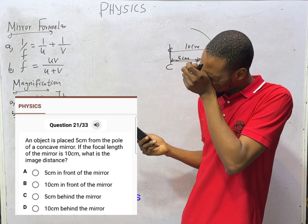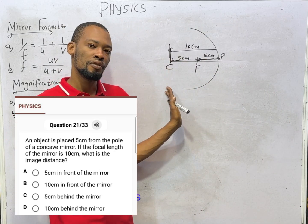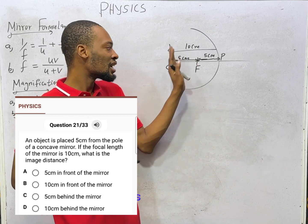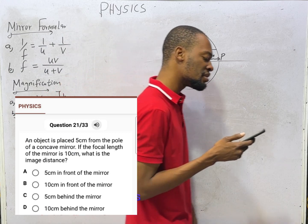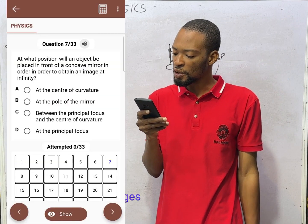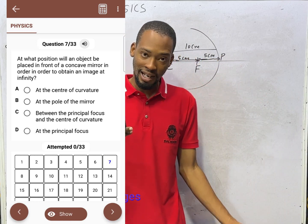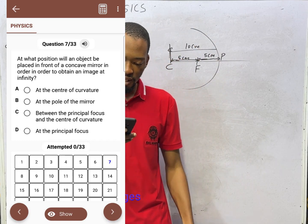As I told you in the last two episodes: if an object is placed at the center of curvature, the image will also be formed at that center of curvature. So the object is here and the image will also be formed at the center of curvature — option C is correct. If an object is placed at the focus, the image will be formed at infinity. And if the object is placed at infinity, the image will be formed at the focus. So for an object to form an image at infinity, it must be placed at the focus — option D is correct.